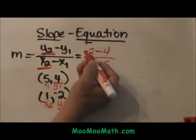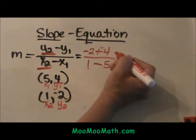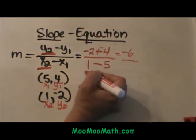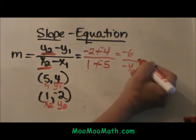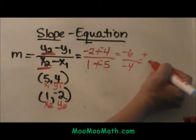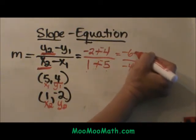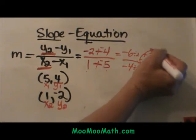Here is my equation. Negative 2 minus 4 is negative 6. 1 minus 5 is negative 4. So I have a negative divided by a negative which is positive 3 halves. All I did right there was reduce by 2 to get positive 3 halves.